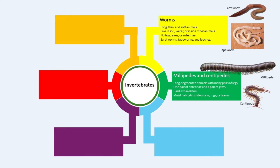Millipedes and centipedes are long, segmented animals with many pairs of legs. They have one pair of antennae and a pair of jaws. They have hard exoskeletons that help them protect their soft bodies. They live in moist habitats such as under rocks, logs or leaves.